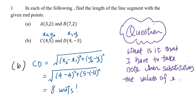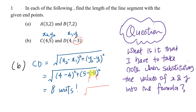Here's something important to take note of when substituting values. Why do I highlight bracket (−3)? Because if you have a negative value, it is very important that you bracket it. If you don't bracket the negative 3, you may end up with an incorrect answer. So always bracket negative values — there will be two brackets: a smaller one inside and a bigger one outside.